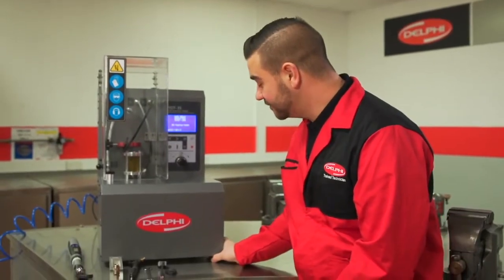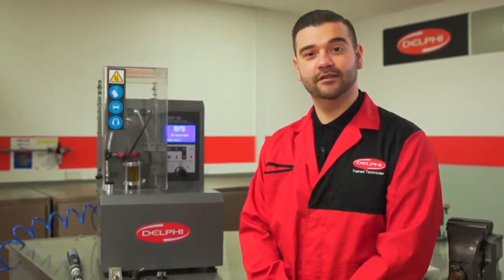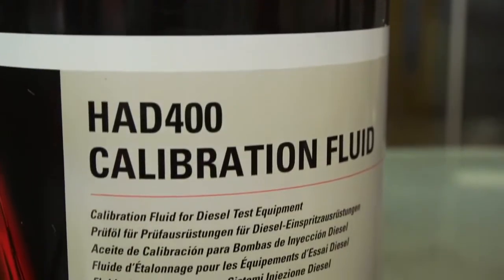So setup is simple. First secure the machine by adjusting the feet on the base, then fill with calibration fluid to ISO 4113 standard which is Delphi part number HAD 400.